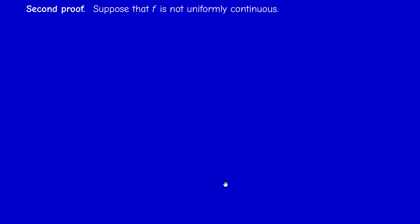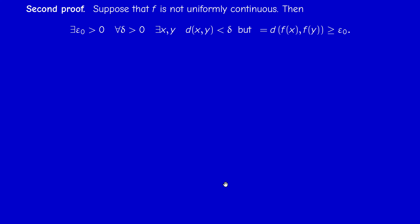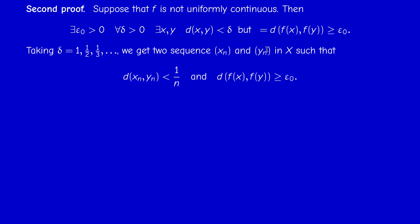The second proof relies on the sequential compactness of X, using a typical contradiction argument. Suppose f is not uniformly continuous. Then there exists epsilon_0 positive such that for every delta, we can find two points x and y whose distance is less than delta, but whose image distance is at least epsilon_0. Since delta is arbitrary, take delta equal to 1, then 1/2, then 1/3, and so on. For each such delta = 1/n, we find points x_n and y_n whose distance is less than 1/n, but the distance between f(x_n) and f(y_n) is at least epsilon_0.